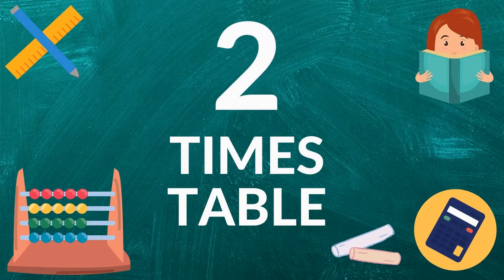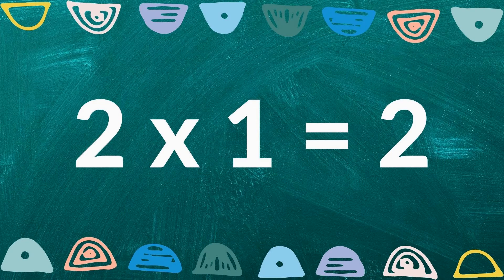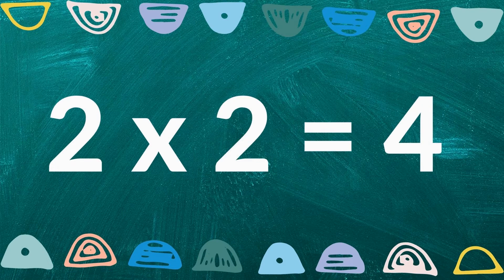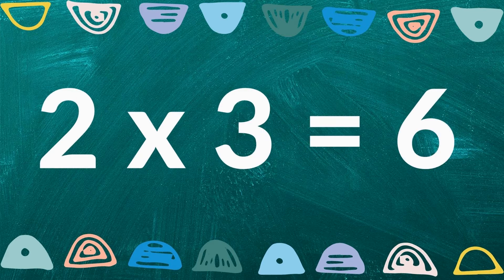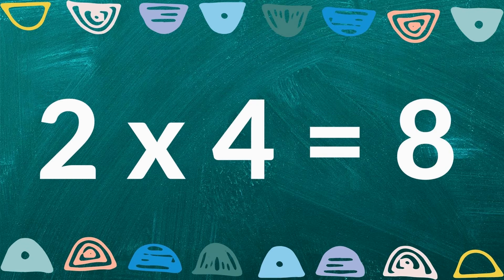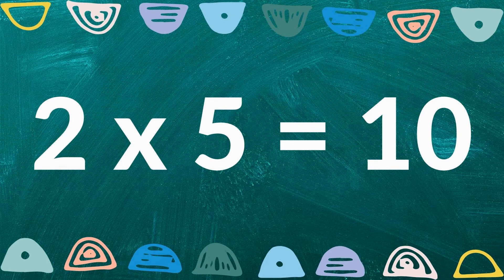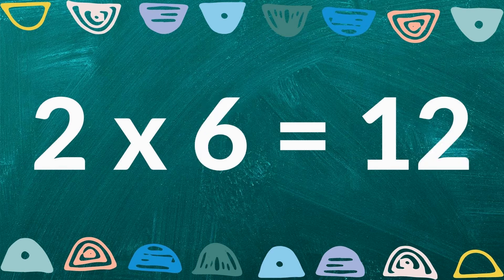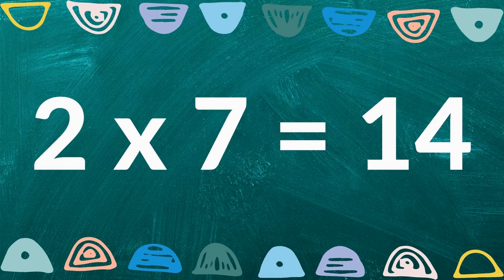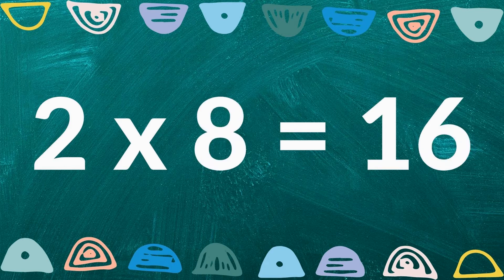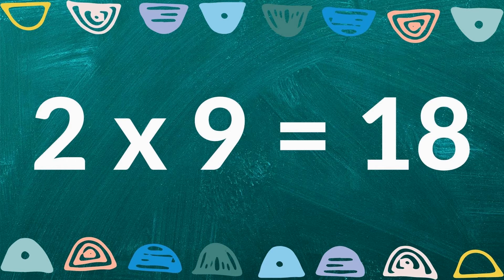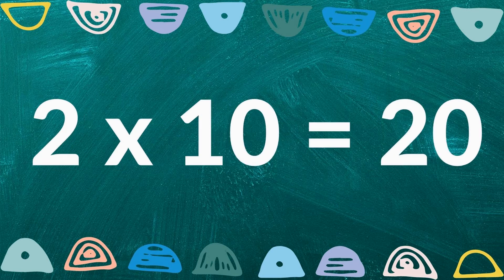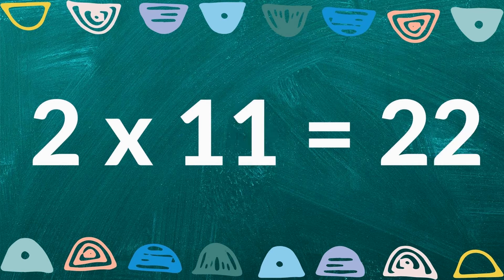Two times table. Two times one is two, two times two is four, two times three is six, two times four is eight, two times five is ten, two times six is twelve, two times seven is fourteen, two times eight is sixteen, two times nine is eighteen, two times ten is twenty, two times eleven is twenty two.